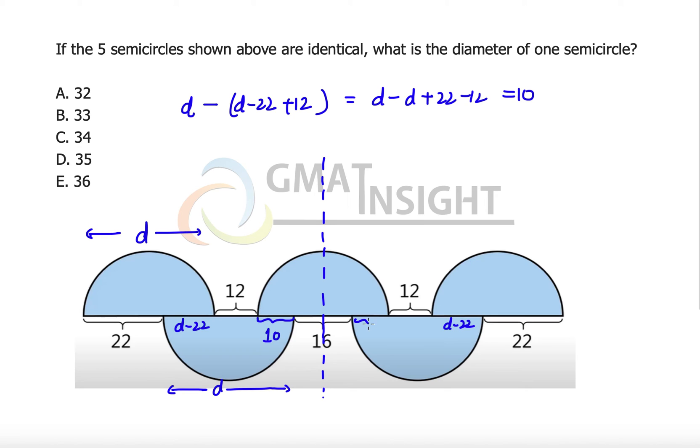In the similar way we can find out this distance as well, and this distance also turns out to be 10 units. Now we can see that the diameter d will be equal to 10 plus 16 plus 10, which is equal to 36.